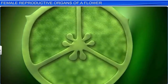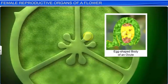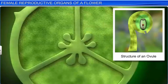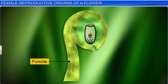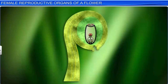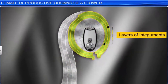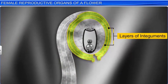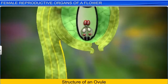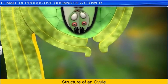The ovule, considered by botanists as the forerunner of the seed, has an oval or egg-shaped body. It remains attached to the placenta by a stalk called the funicle. In fact, the ovule's body fuses with the funicle in a region called the hilum. The ovule is well protected with one or two protective coverings called integuments, which later form the seed coat. The integuments cover the entire ovule except at the apex, where they form a narrow opening called the micropyle.